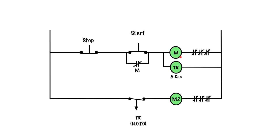When I press start, the M coil energizes, the M contacts close to form the hold-in circuit, the TDR coil energizes, those contacts close, and M2 energizes. The timing function has no role at this point — the moment I hit start, M energizes, TDR energizes, and M2 energizes all at the same time. When I release the start button, everything is held in by the hold-in contact, which provides a parallel path keeping everything energized and the contacts closed.